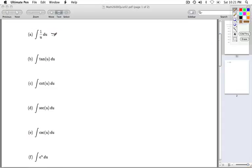The integral 1 over u du, natural log absolute value of u plus c. Integral tangent of u du, natural log absolute value secant of u plus c, or natural log negative natural log absolute value cosine u plus c. Either is acceptable.